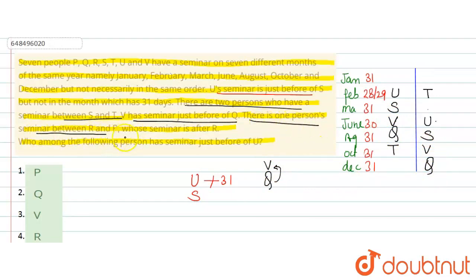Phir given hai, there is one person seminar between R and P, P whose seminar is after R. To yahan par R, yahan par P, kyunki P ka seminar R ke baad hai. So R aur P ke beech mein 1 person hona chahiye. To yahan par ek hi hai. Is case mein R aur P ke beech mein 5 person hai, to isliye aapka yeh wrong ho gaya, because yahan par R aur P ke beech mein 1 person hona chahiye.